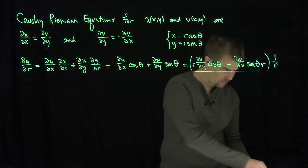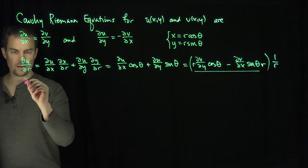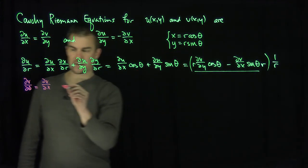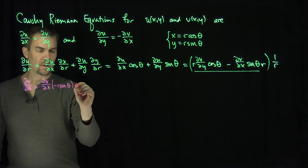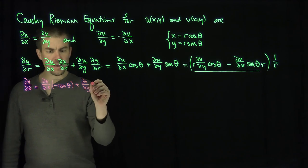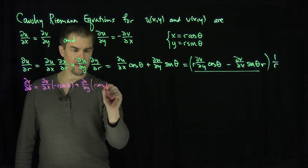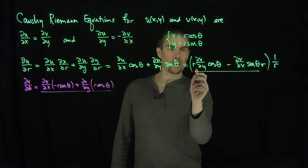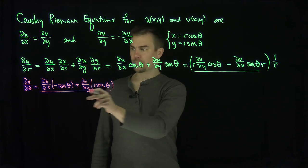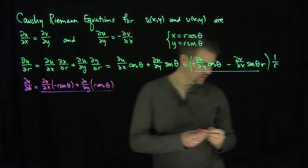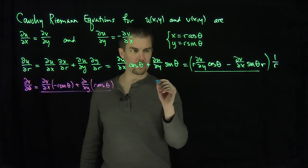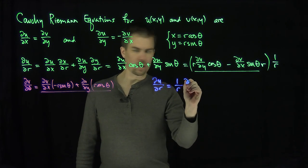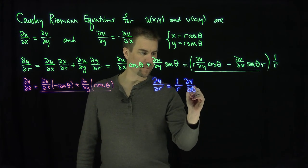Let's verify that claim. Partial v partial theta, by the chain rule, equals partial v partial x times (negative r sine theta) plus partial v partial y times (r cosine theta). Comparing with our expression, we see it exactly equals partial v partial theta. So our first Cauchy-Riemann equation becomes: partial u partial r equals 1 over r times partial v partial theta. Let's box that.